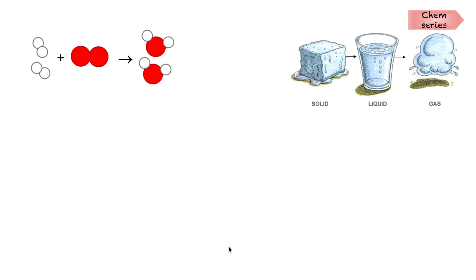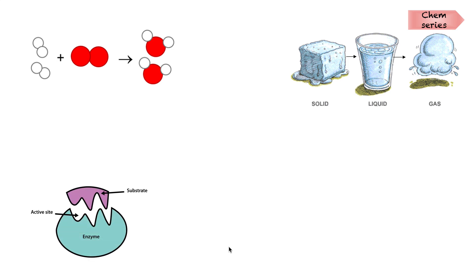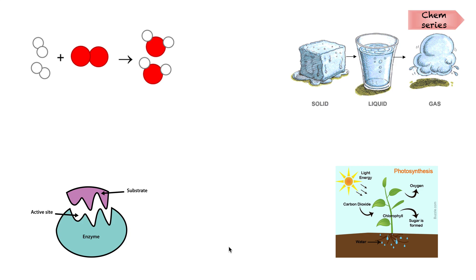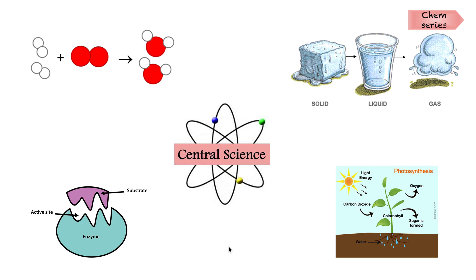Chemistry is the study of composition, properties, and transformations of matter. It is concerned with substance change — the change can be product formation from one or more reactants, or any other physical changes of a substance. Chemists understand changes from the atomic level, enabling creation of new materials with desired properties and society-useful materials. Chemistry is also used by biologists to understand reactions in living organisms, and because of its broad scope it touches all the sciences, which is why it is called the central science.